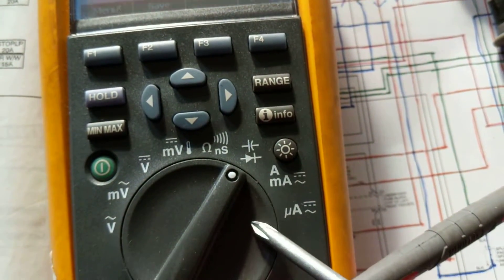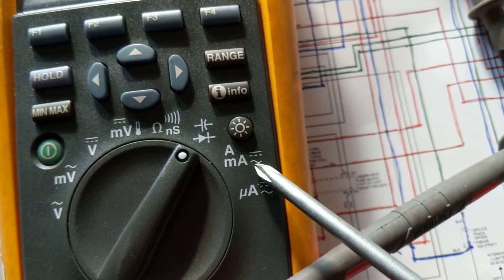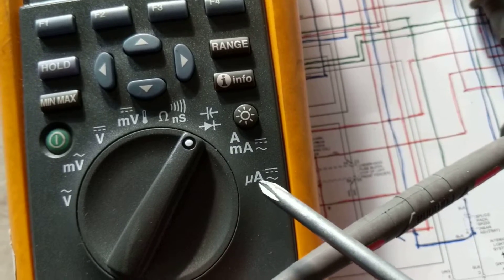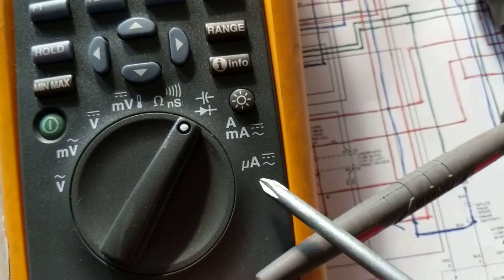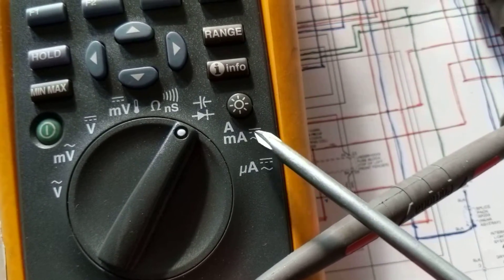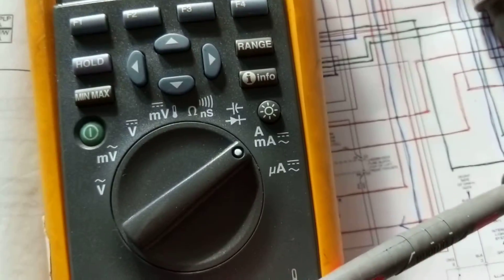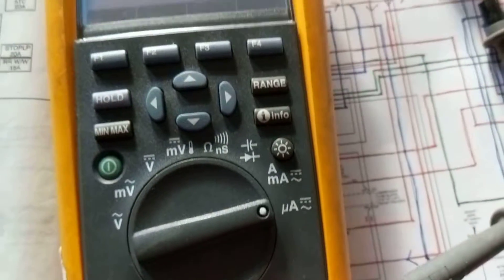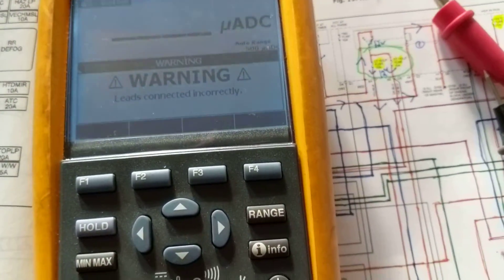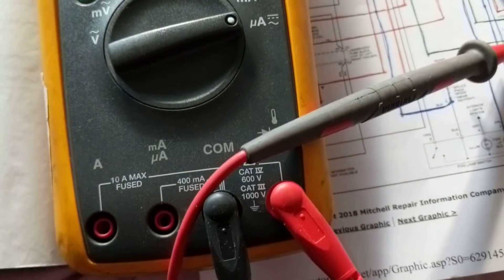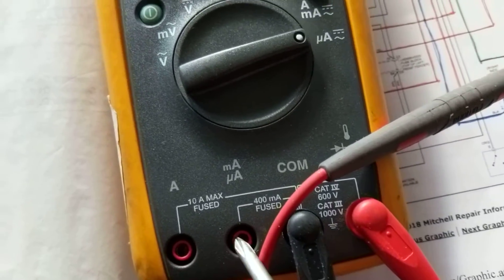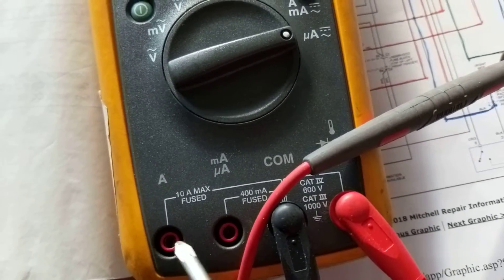The other ones are amps DC and microamps. But the nice feature is it warns you that you don't have the leads in the proper sockets, because the leads are supposed to be in this one if you want to measure amps.